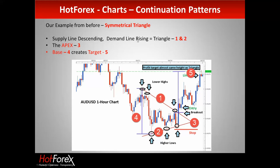On this slide, point one and two are our supply and demand lines. The supply line is dropping and demand increases — suggesting we're going to go up. The apex, point three, is the end of the triangle. Points four and five: point four is the base creating our potential target, and the target is the same distance once the breakout occurs. Our target — point five — equals the base distance.